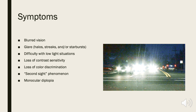It's important to note that the degree of visual disability caused by cataracts depends both on their size as well as their location. For example, axial cataracts affecting either the nucleus or the central subcapsular area are typically more disabling than peripheral cataracts.